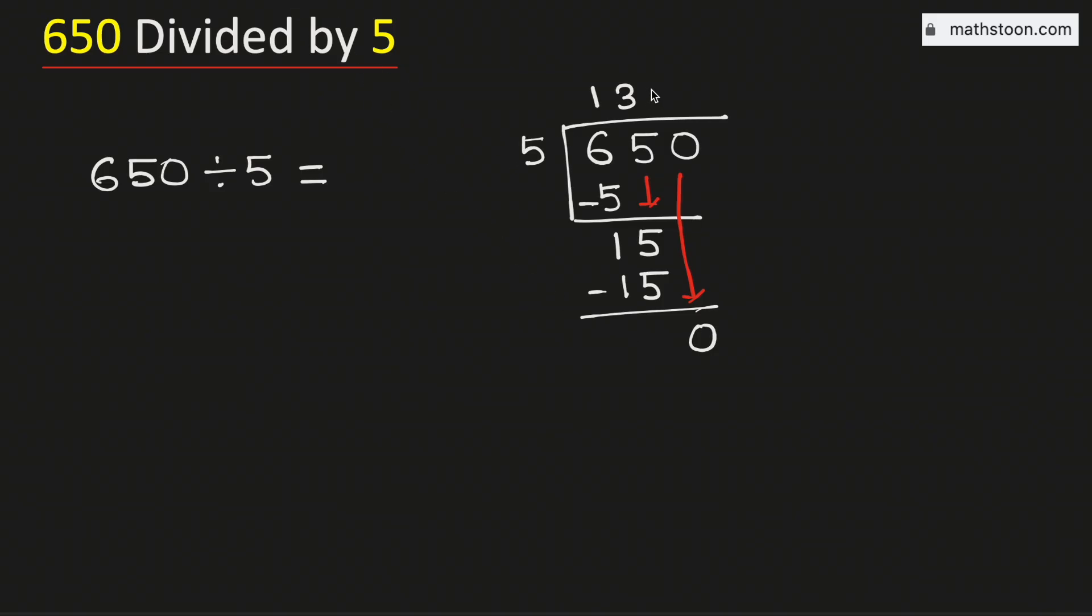And we know that 5 times 0 is 0. Subtract, we get 0.